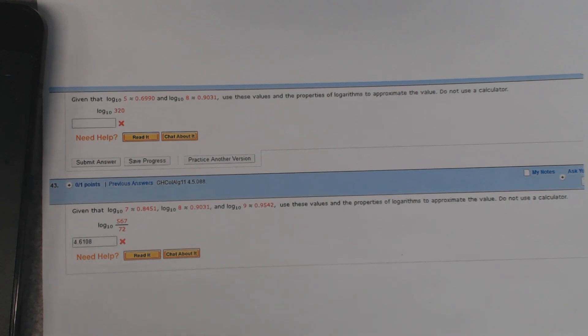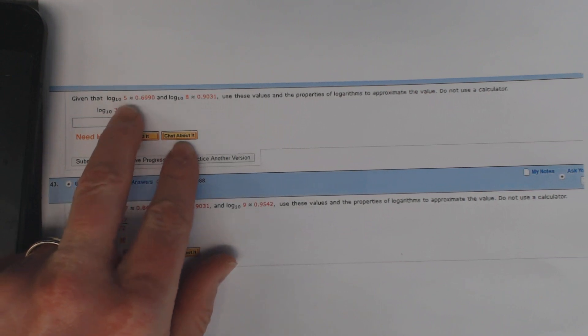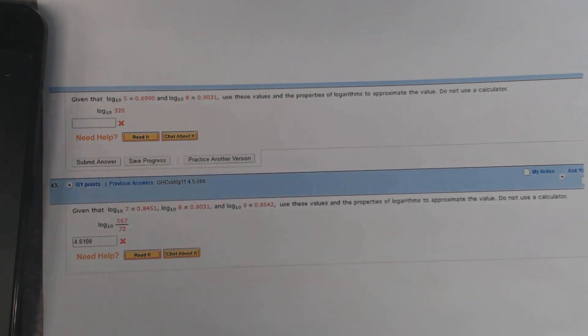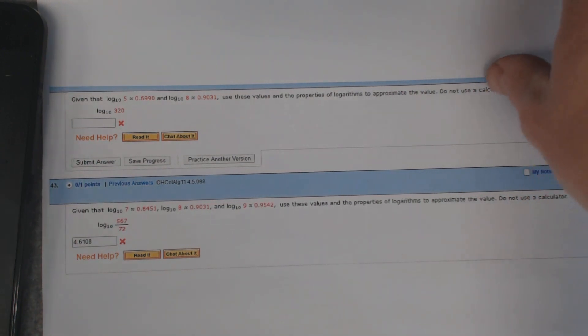Before you had a calculator that would do logarithms, you had a table of basic logarithms like log base 10 of 5 is approximately some value, log base 10 of 8 is approximately some value. That's all you'd get and you'd have to use the properties of logarithms to try to manipulate it and get a value.